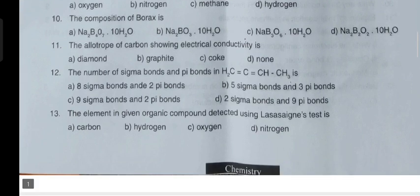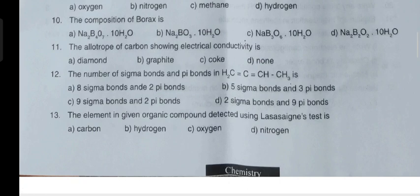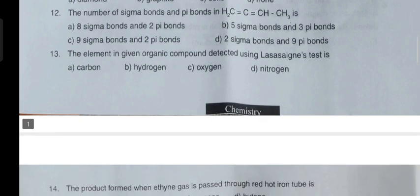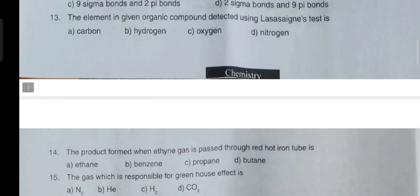The composition of borax. The allotrope of carbon showing electrical conductivity. Number of sigma bonds and pi bonds in H2C=C=CH-CH3. The element in given organic compound detected using Lassaigne's test.